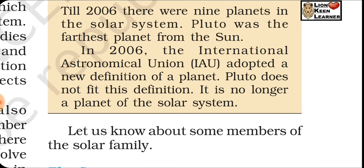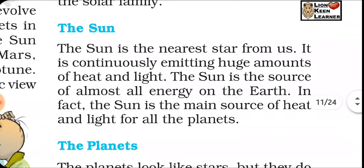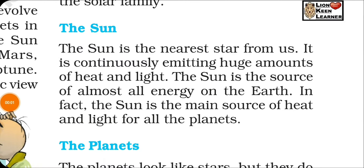The Sun is the nearest star from us. It is continuously emitting a huge amount of heat and light. The sun is the source of almost all energy on the earth — it is the main source of heat and light for all the planets. The temperature at the surface of the sun is about 6,000 degrees Celsius. The sun is not a solid object; it is a sphere of hot gases, consisting mostly of hydrogen. Nuclear fusion reactions take place in the center of the sun.